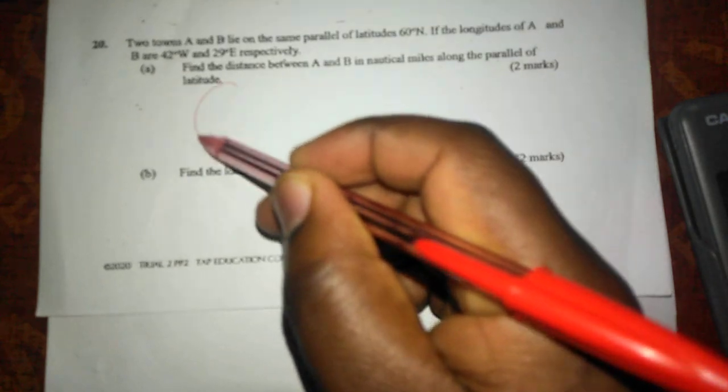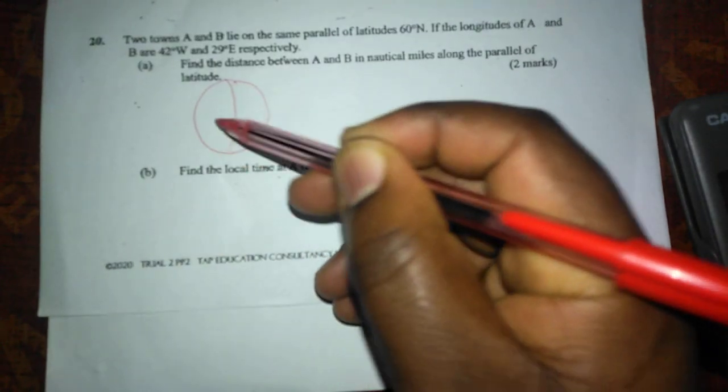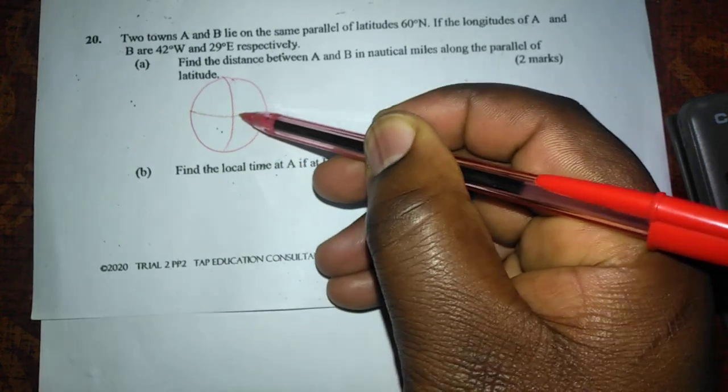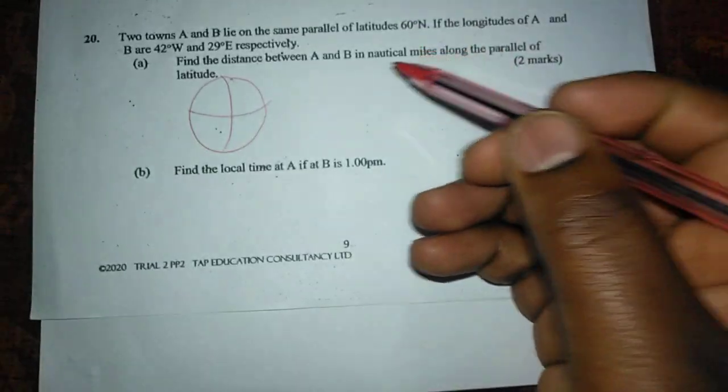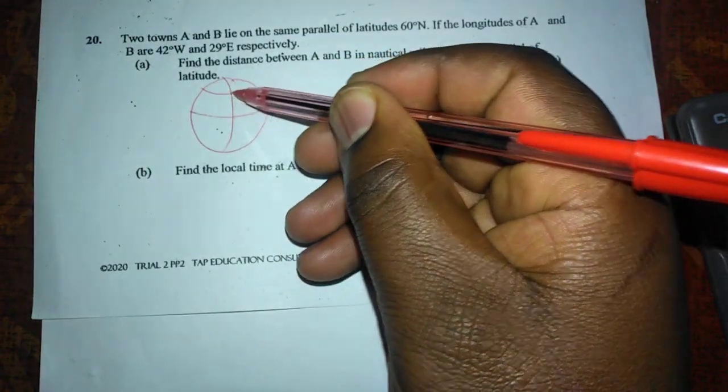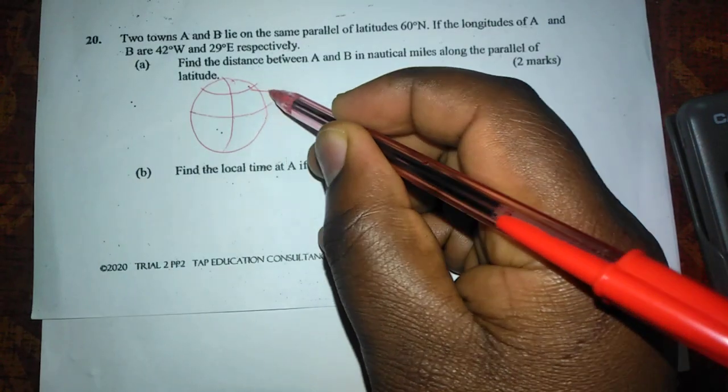Therefore we can see that, trying to sketch the positions, this is zero degrees prime meridian and zero degrees equator. We are told that two places lie on 60 degrees north.